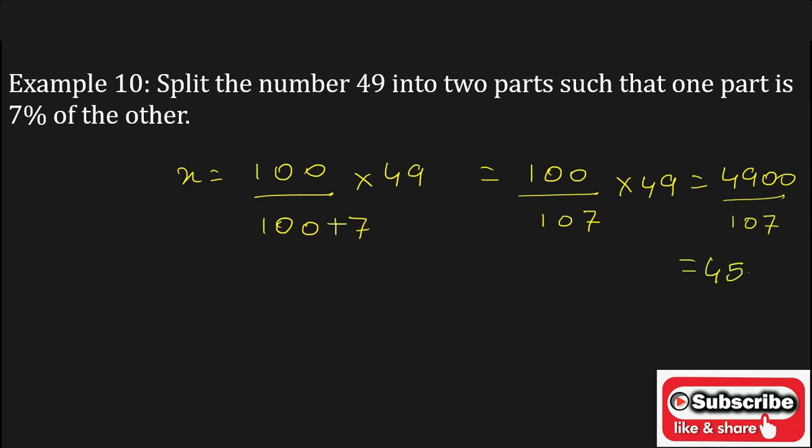And y equals 7 upon 100 plus 7 into 49. It will become 7 into 49 equals 343, 343 upon 107 which gives you the answer 3.21.